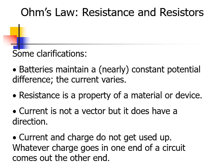A few clarifications before we keep moving on. First, batteries maintain a nearly constant potential difference — a 9-volt battery is going to have a potential difference of 9 volts, and that's not going to change; it's just the current that will vary. Second, resistance is the property of a material or device — a certain light bulb is going to have the same resistance no matter what circuit you plug it into, no matter how much power you put through it. Third, a current is not a vector, but it does have a direction, because current can flow through a circuit in one direction or the other. And finally, current and charge do not get used up — whatever charge goes in one end of a circuit comes out the other end.